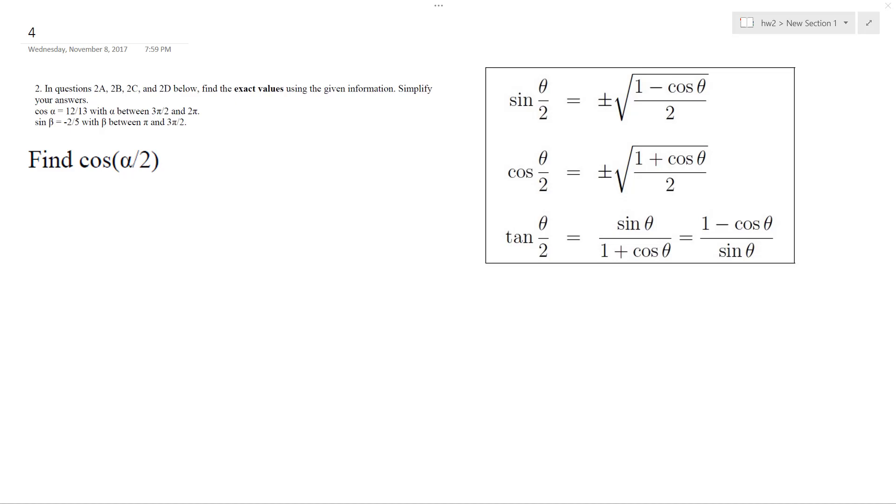Solving this problem, we're using the half-angle formula, this middle formula here in regards to alpha. We're given that cos alpha equals 12 over 13.